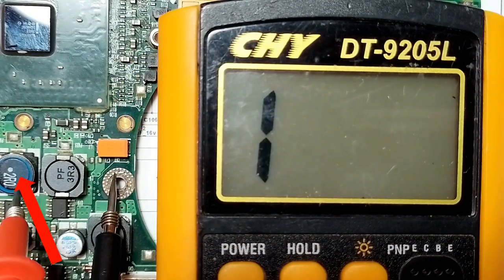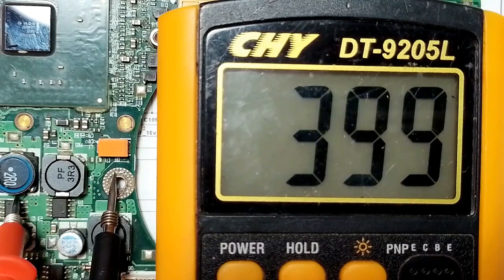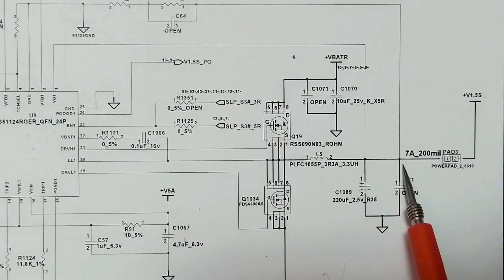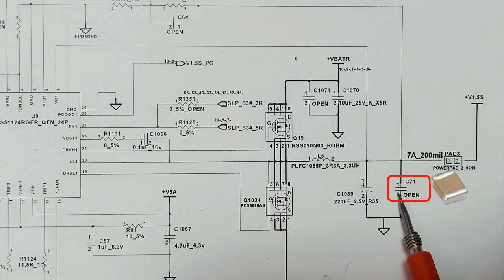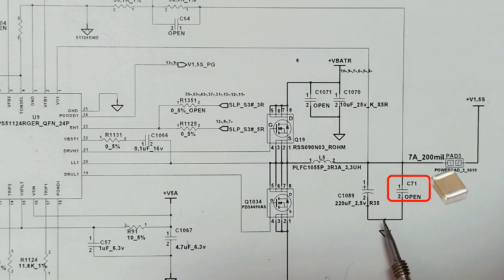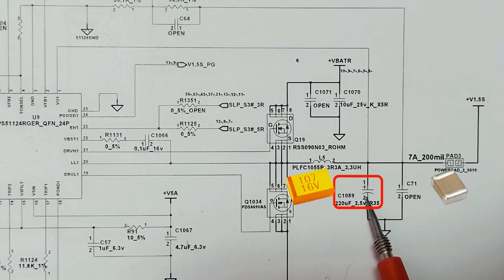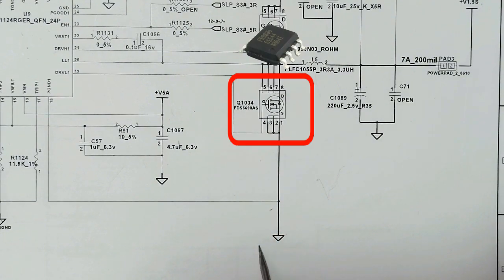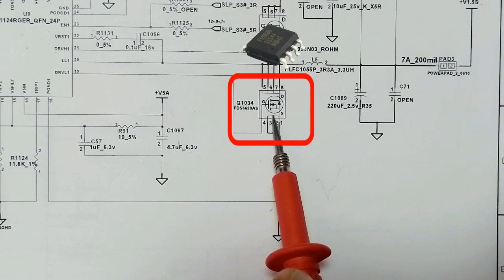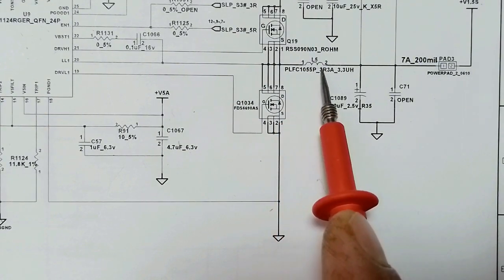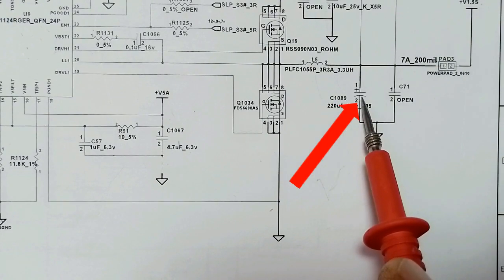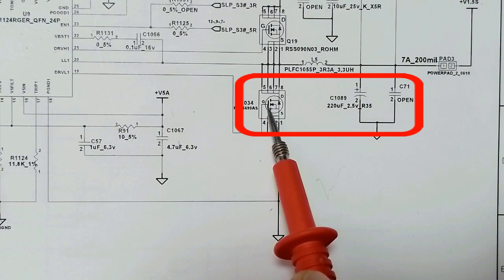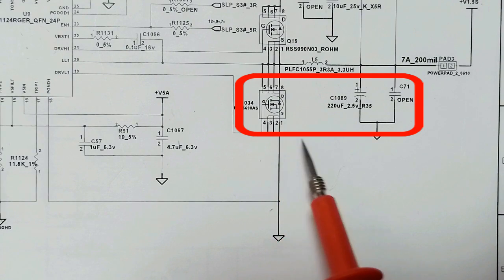For this other inductor, if we check it, we get a reading — this is a good reading. We don't have a short circuit in the other channel. So, capacitor C721 could be the failed component because it is connected to the ground. C1089, this electrolytic capacitor, could also be the shorted component. And Q1034, the MOSFET, is also connected to ground, so it is also a probable cause of this failure. One of these — the capacitors or the MOSFET — could be the shorted component.